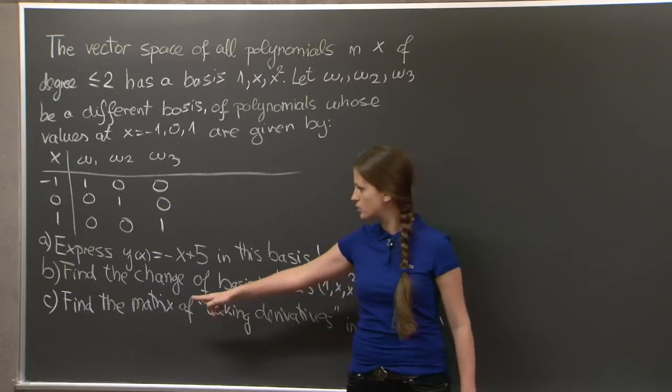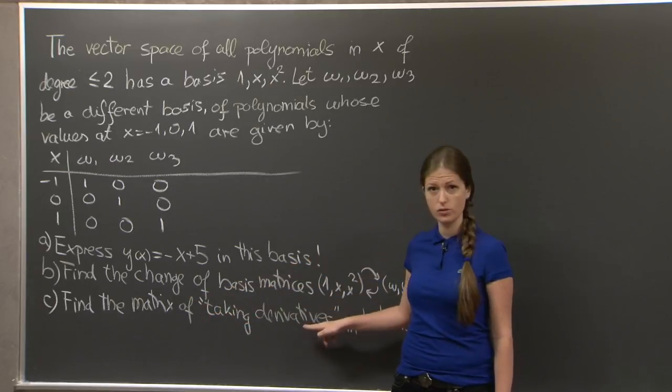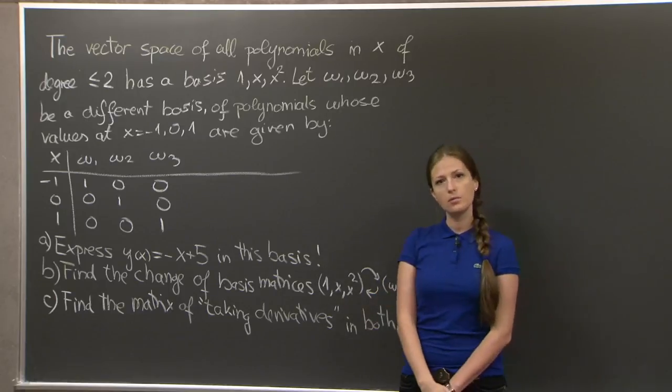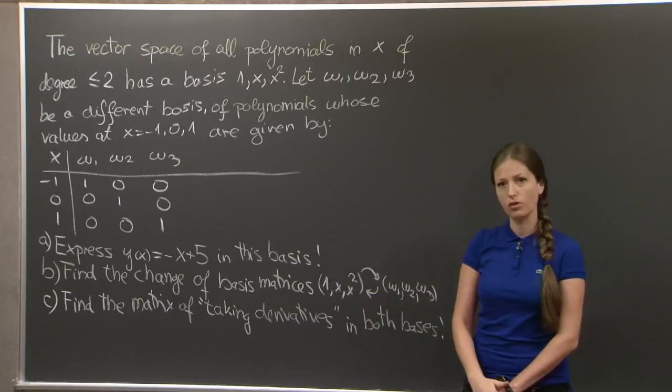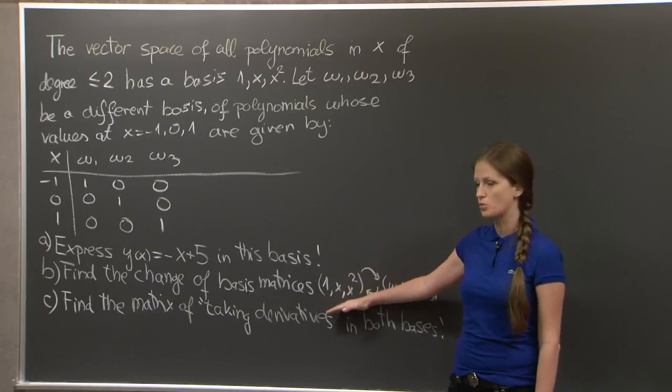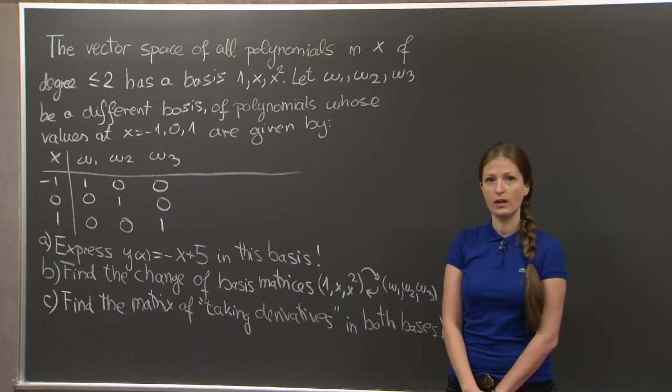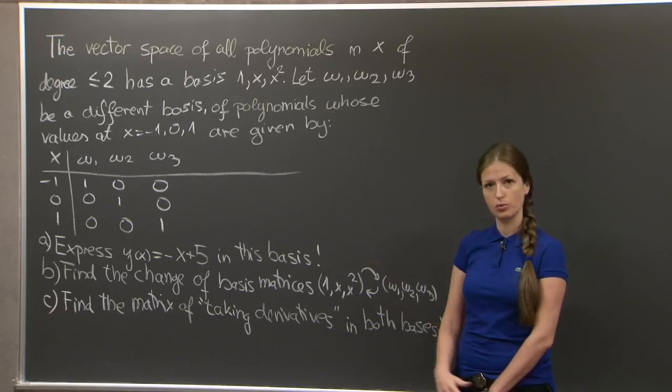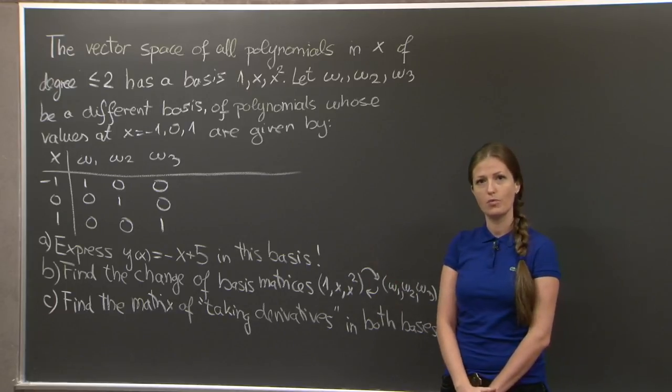And finally, we're asked to find the matrix of taking derivatives, which is a linear map on this space, in both of these bases. And let me give you an extra level of challenge: try to do as much of this as possible without explicitly finding w1, w2, and w3. I'll let you think about the problem.